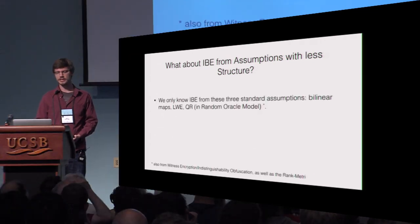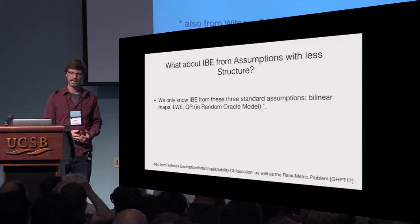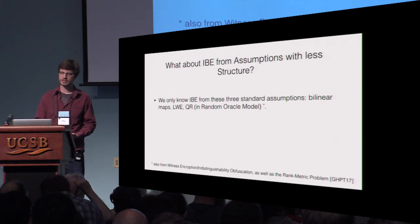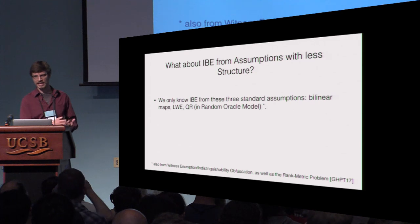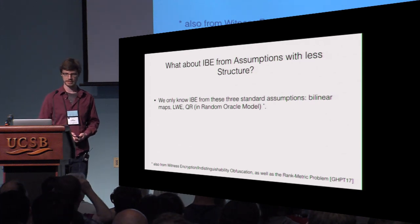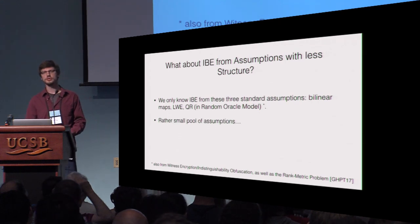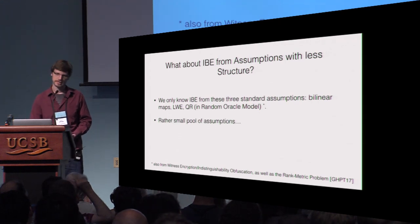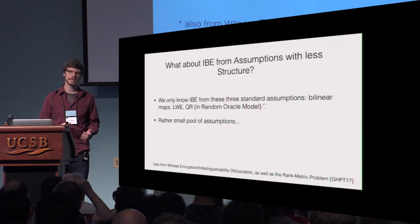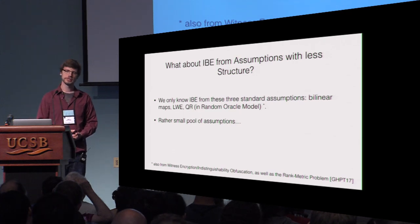We basically know IBE from three standard assumptions: bilinear maps, LWE, and quadratic residuosity. In the case of quadratic residuosity, we even need a random oracle to realize this notion. This might be seen as a rather small pool of hardness assumptions, especially when we compare this to public key encryption, where there is a much wider pool of assumptions from which we can instantiate this primitive.